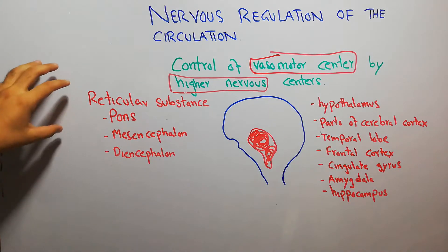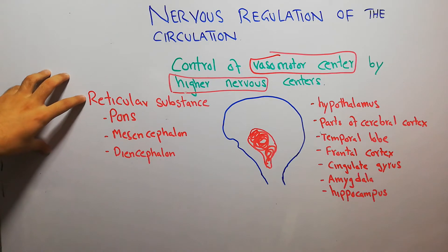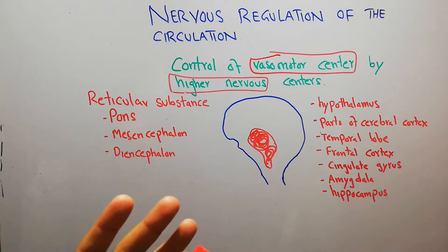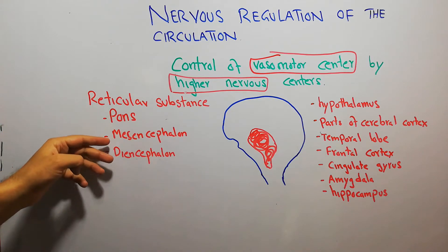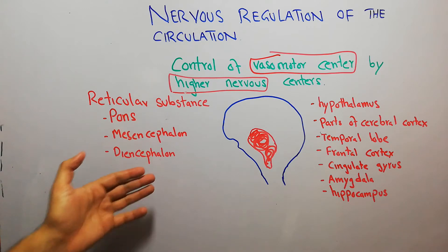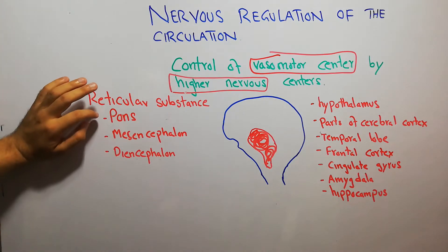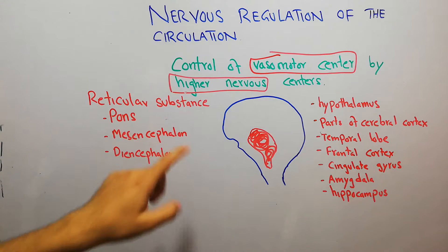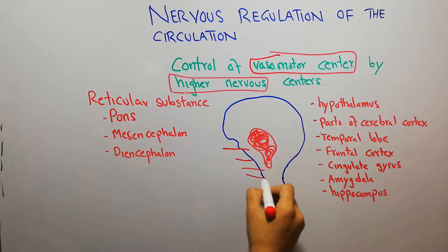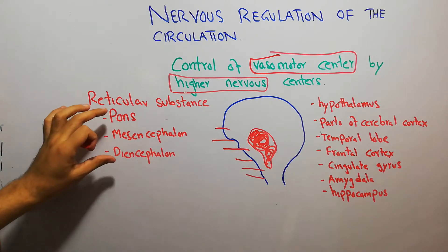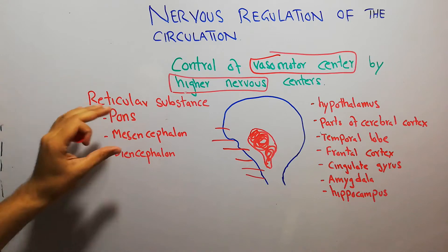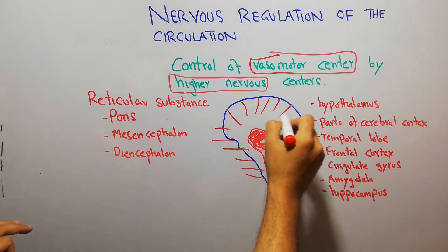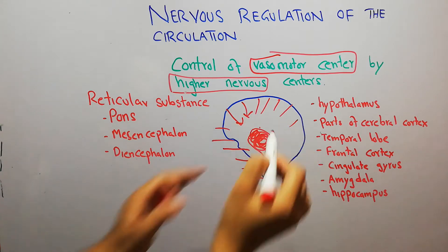The first and most important part of the brain that has an effect on the vasomotor center is the reticular substance. The reticular substance is not a properly defined area, but it has nuclei from different regions — the pons, the mesencephalon (which is the midbrain), and the diencephalon (which is the forebrain). Neurons of the reticular substance present at all these levels contribute to and influence the activity of the vasomotor center.